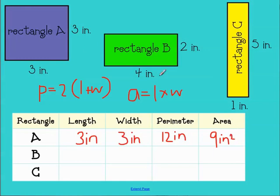Okay, let's take a look at rectangle B. Rectangle B has a length of 4 and a width of 2. And using my formula, perimeter equals 2 times length plus width. Length plus width is 4 plus 2, which is 6, and 2 times 6 is 12 inches. And area equals length times width. So length is 4, width is 2. Area equals 4 times 2, which would be 8 inches squared.